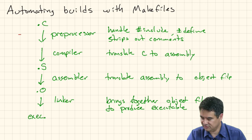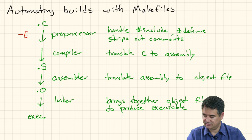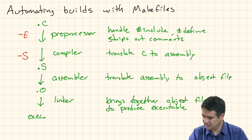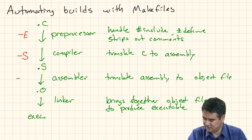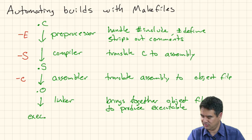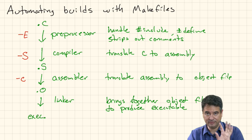To run the preprocessor, it's -E (capital E). To run the compiler and stop at the assembly file, it's -S (capital S). To run the process all the way through to the object file, it's -c (lowercase c). And then the linker is invoked as the last step. So to recap: clang -E starts with your C file, preprocesses it, and stops. clang -S compiles it down to assembly and stops. clang -c goes all the way to the object file and stops. And with no options, it goes all the way through the whole process.